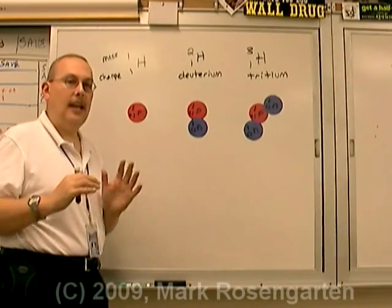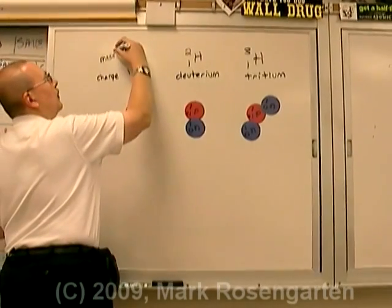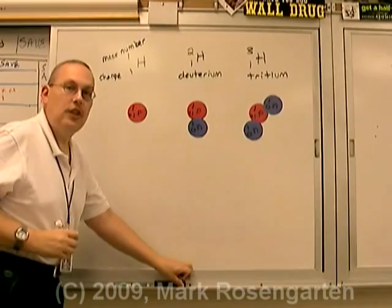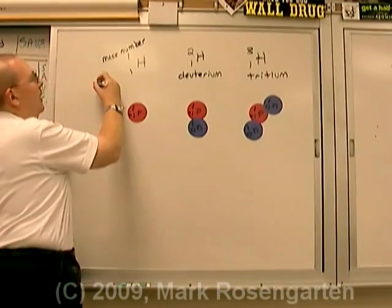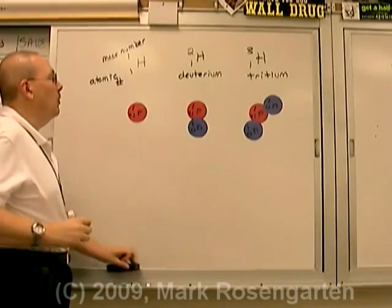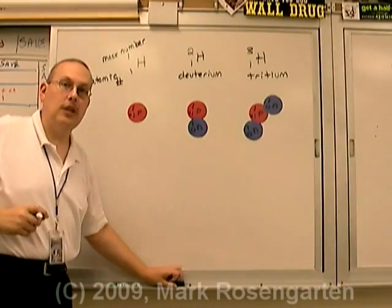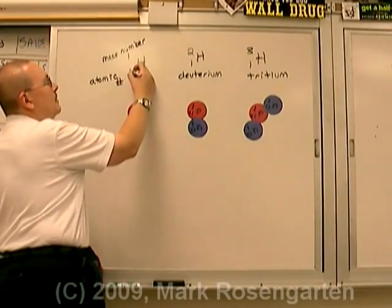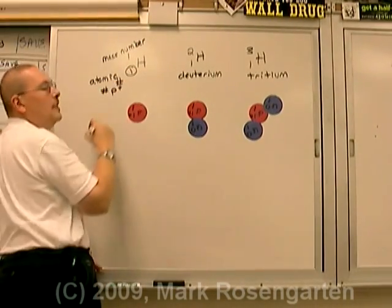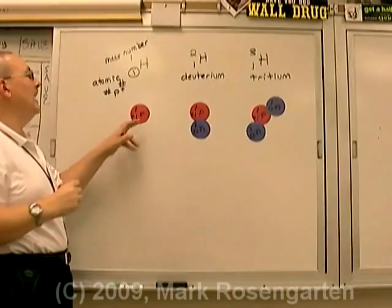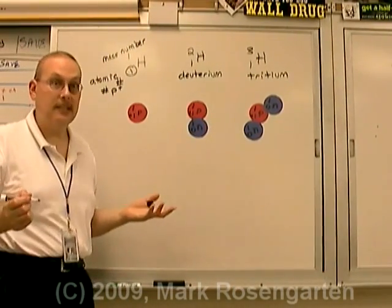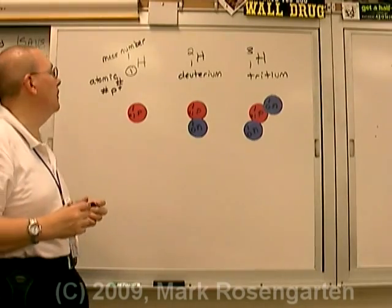When you're looking at an element, mass can also be referred to as the mass number and charge is also referred to as the atomic number. So if you want to find the number of protons in the nucleus, it's simply the atomic number. Each one of these has an atomic number of one and therefore it has exactly the same number of protons and is the same element.